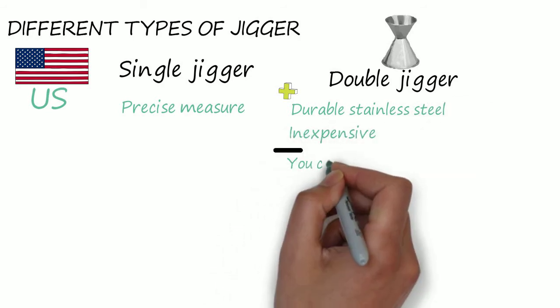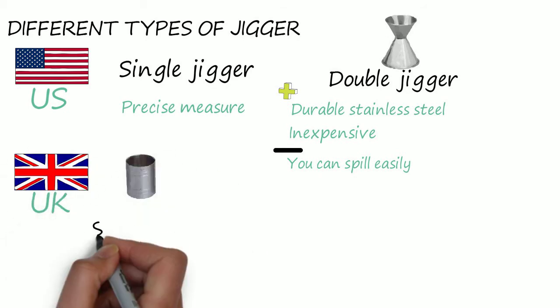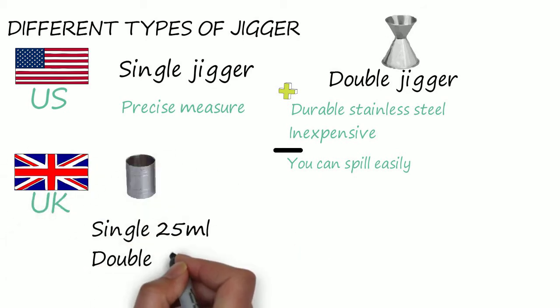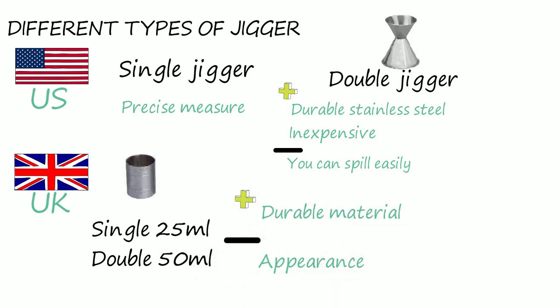The downside is that it's quite shallow, which lets you spill easily. In the UK, the most common will be stainless steel single measure 25ml or double measure 50ml, which is made from durable material, but the appearance is probably the biggest downfall.